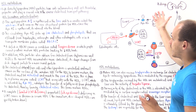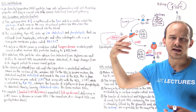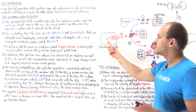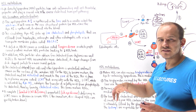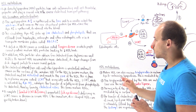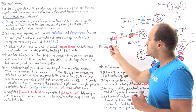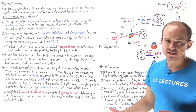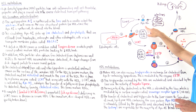This apolipoprotein A1 circulates in the bloodstream. As it travels past the capillaries of extrahepatic cells — such as cardiac cells, skeletal muscle cells, and adipose cells — as well as hepatocytes and enterocytes, it receives cholesterol molecules and phospholipids from these cells. The phospholipids come from the cell membrane, but free cholesterol has to come from within the cell. The transporter protein that shuttles free cholesterol across the cell membrane is known as ABCA1, present on the surface of extrahepatic cells, hepatic cells, and enterocytes.